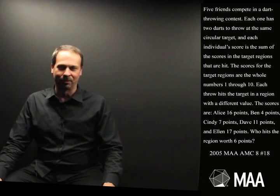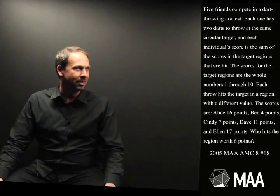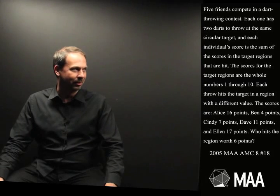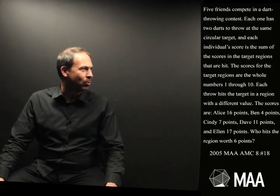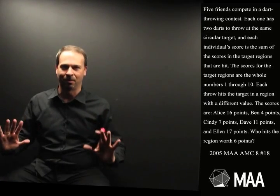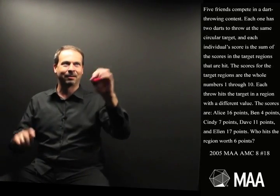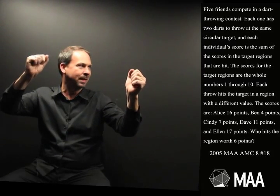Five friends compete in a dart throwing contest. Each one has two darts to throw at the same circular target, and each individual's score is the sum of the scores in the target regions that are hit. So throw darts at a target, they've got scores on them, add up the two values, that's the score each person gets.